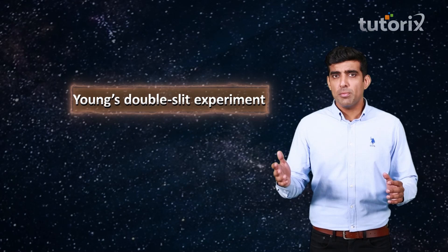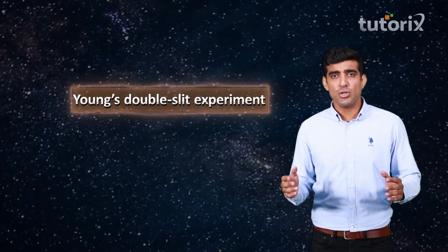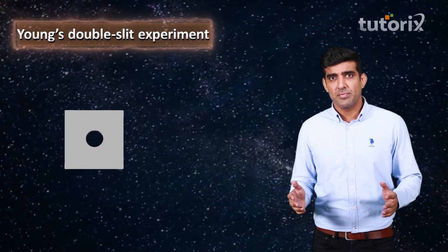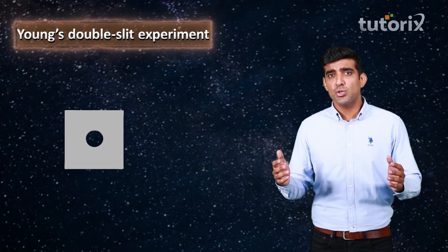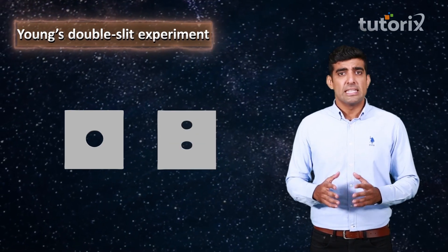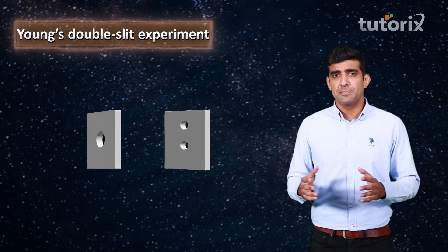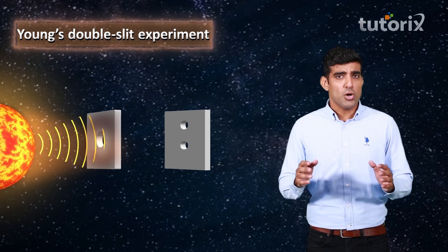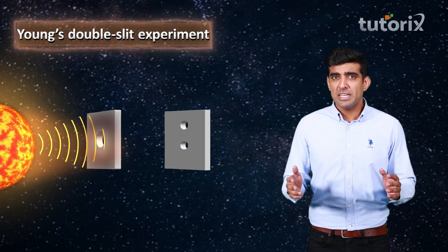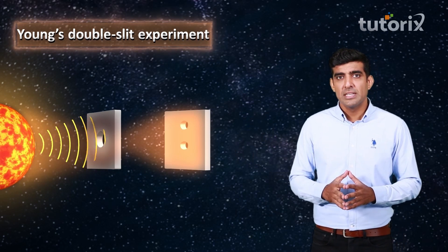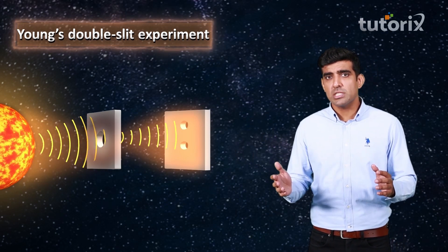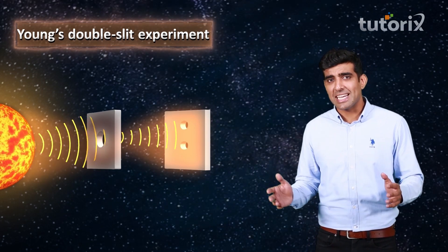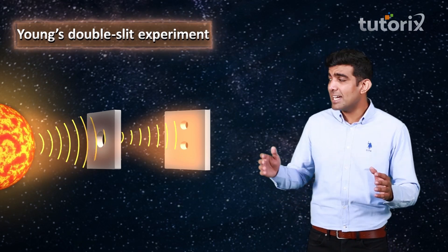In 1801, Thomas Young reported his experiment on the interference of light. He took a cardboard and punched a pinhole in it, then punched another two holes in a second cardboard. These two cardboards were kept symmetrically. Sunlight was allowed to fall on the first cardboard. According to Huygens' principle, this pinhole acted as a source of light. The waves from this source fell on the second cardboard, and therefore the two pinholes on the second cardboard also acted as sources of light.